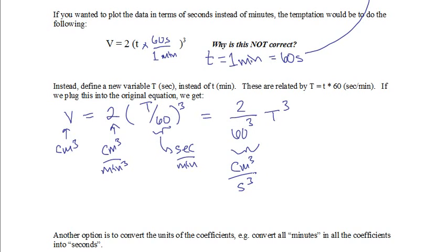So now this equation, where v in centimeters cubed equals 2 over 60 cubed times big T cubed, that will actually now fit all the data that we had filled in into the table above. To see this, for example, let's let the big T, which is in seconds, equal 60 seconds, and plug that in. So v equals 2 over 60 cubed times 60 cubed equals 2 centimeters cubed, which is what you get correctly in the table.